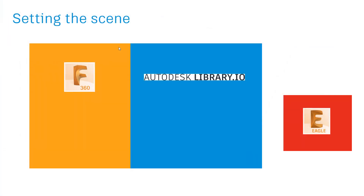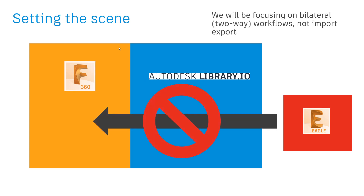To start, we're going to set the scene and you can think of these as islands. On the far right we first have the original, which is Eagle and its local libraries. Now as time has gone on we've developed library.io, and now Fusion 360 Electronics can also work with your library data. We want to make clear that we will be focusing on bilateral or two-way workflows, not import and export. For example, you could take your Eagle files and upload them directly into Fusion 360 — that would be a one-way workflow. It's almost as if citizens from the island of Eagle were to move permanently to Fusion 360, with no relationship back to Eagle. Rather, what we want to focus on is two-way: being able to keep a relationship between data.